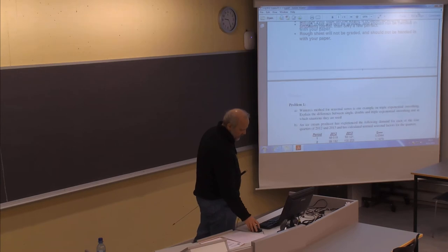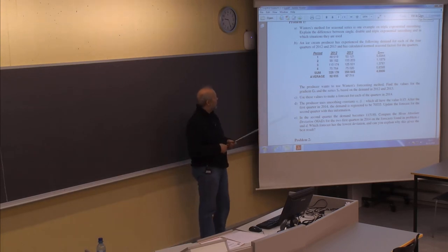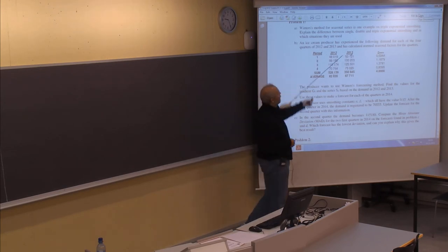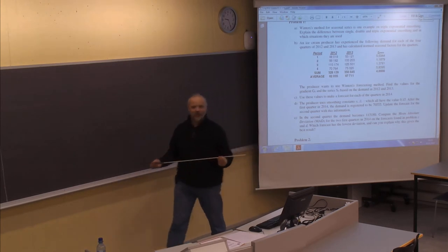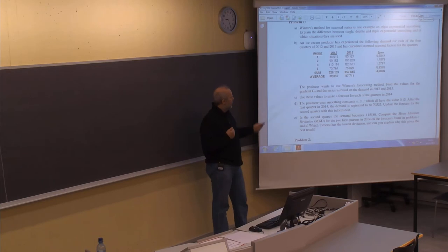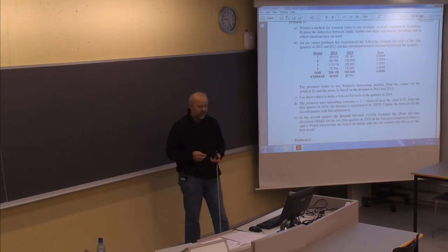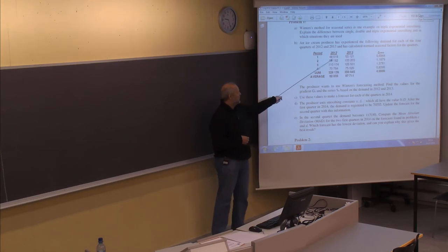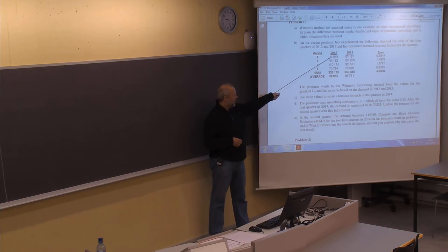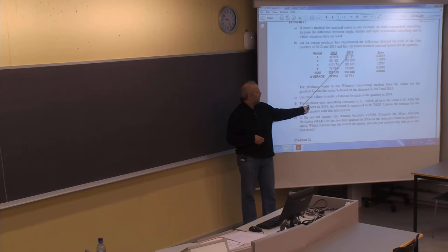Now let's have a look at last year's exam. The first question is a theoretical question where you should explain the difference between single, double, and triple exponential smoothing, and in which situations these techniques are used. In problem b, you are given a specific problem about an ice cream producer who has seen the following demand in the four quarters of the two previous years. This is typically a seasonal problem — ice cream is sold mostly in the summer months, not so much in winter.